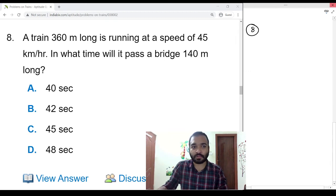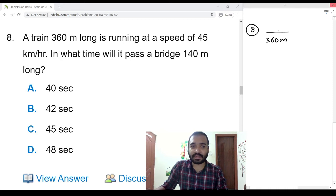Next problem. A train 360 meters long is running at a speed of 45 km/h.